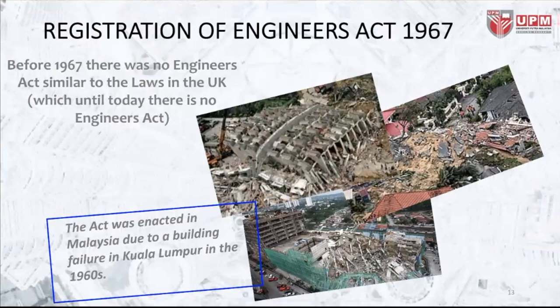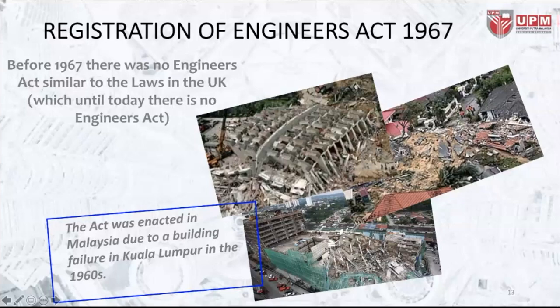Before 1967, there was no Engineers Act. Because Malaysia was previously colonized by the British, after independence in 1957, we were still following UK law. However, since there were so many disasters happening due to man-made structures, the act was enacted in Malaysia following a building failure in Kuala Lumpur in the 1960s. Because there was no framework to charge construction companies, Parliament approved the Registration of Engineers Act in 1967 to make it mandatory for engineering activities to be regulated in order to protect the public.